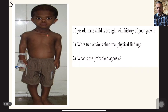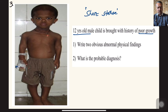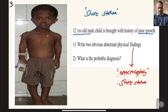Question number three: a 12-year-old male brought with poor growth. The child has very stunted or short growth — a case of short stature. Two obvious abnormal physical findings: number one, macrocephaly (big head), and number two, very short stature. The question will ask about the type of short stature.